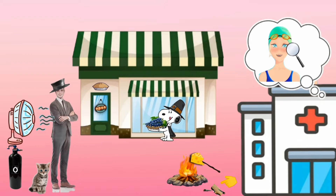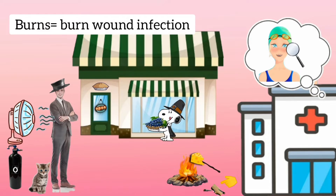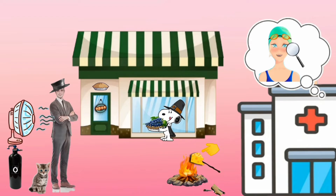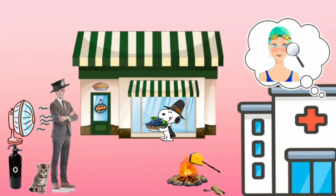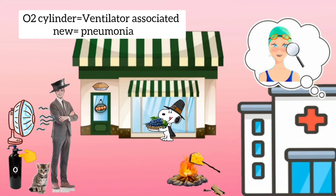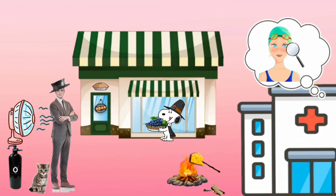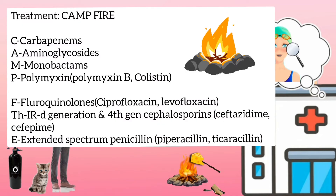In front of the pie shop there is a fire with a lot of burnt material, implying that Pseudomonas causes burn wound infections. On the fire you can see a cheese on a stick — the cheese stick reminds us of cystic fibrosis. The man has also bought a new oxygen cylinder, implying that Pseudomonas causes ventilator-associated pneumonia.